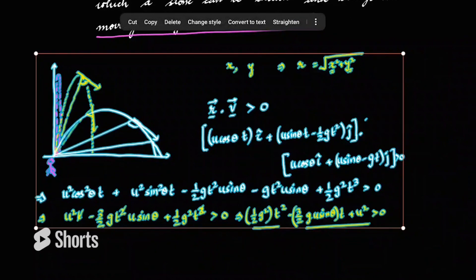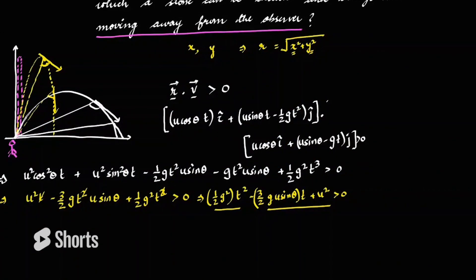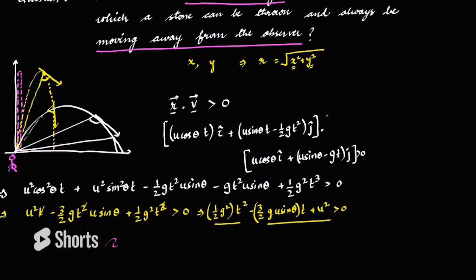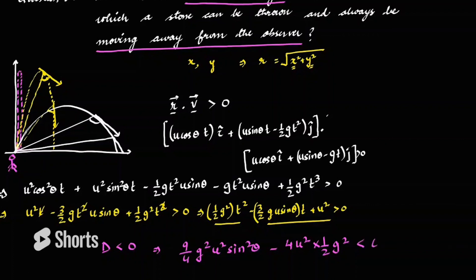Setting the discriminant less than zero: B² − 4AC < 0. Here B = −(3/2)·g·u·sinθ, A = ½g², and C = u². So (9/4)·g²·u²·sin²θ − 4·u²·(½g²) < 0. The u²g² terms cancel, giving: (9/4)·sin²θ − 2 < 0, so sin²θ < 8/9.